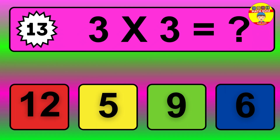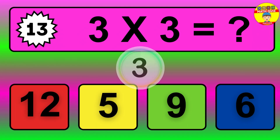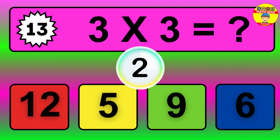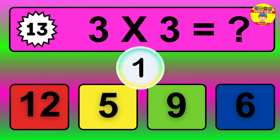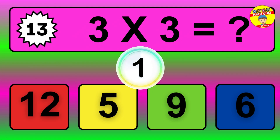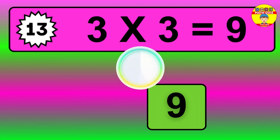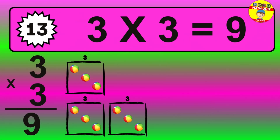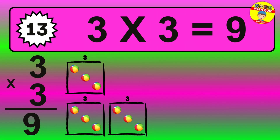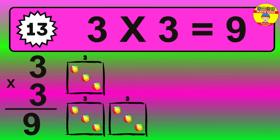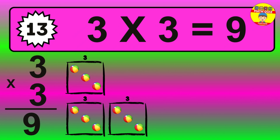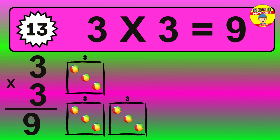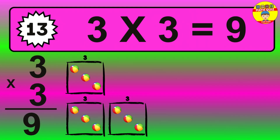Question 13. 3 times 3 equals what? The answer is 3 times 3 is 9. To calculate, we have 3 groups with 3 balls each one. So, how many balls do we have? 9 balls.